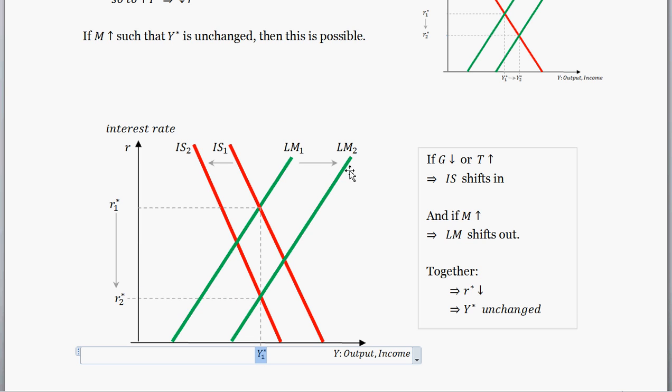How much exactly should we increase the money supply? And how much exactly should we either decrease government spending or increase the taxes or some combination of the two? That's going to depend on the economy you're actually dealing with. But it's theoretically possible that these two could be shifted in such a way that the interest rate goes down and therefore investment increases and we keep output constant. And how do you do that? It's going to be some combination of an expansionary monetary policy and a contractionary fiscal policy.